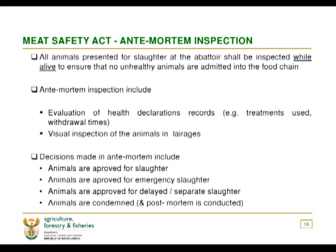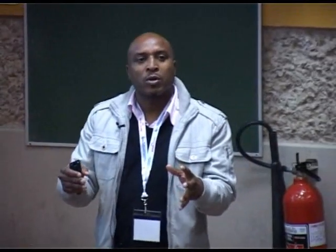Ante-mortem inspection includes evaluation of health declaration records, for example treatment records including antibiotics, and visual inspection of the animals in lairages. The decisions made during ante-mortem include: animals approved for slaughter — those that are healthy and have no issues are slaughtered first. But there are emergency cases, such as an animal with a broken neck — because we want to prevent suffering, which contributes negatively to meat quality, those are prioritized.